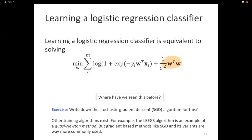You can write down the stochastic gradient descent algorithm for this — in fact, Homework 6 asks you to do it. It will have the same structure as SVM, with the only difference being the gradient. In the next lecture we'll pick up from here, and I have office hours if you want to continue.